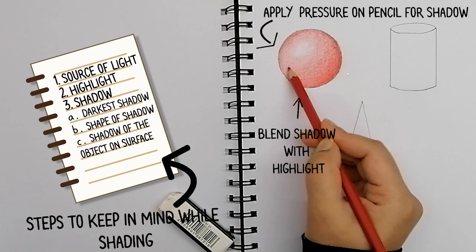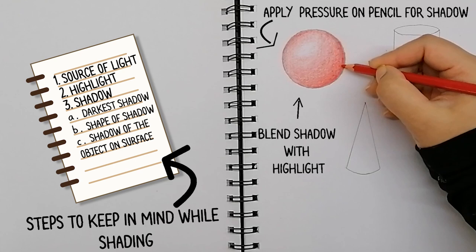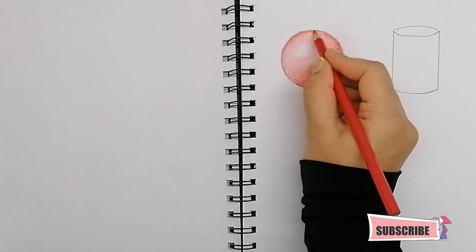I'll use an eraser to make the highlight more prominent. Remember one thing: the shinier the surface, the more reflection of light, and hence the whiter the highlights will be. Example: satin fabric.